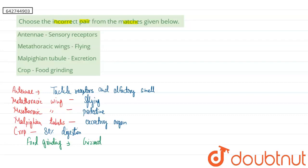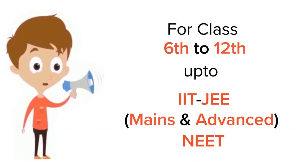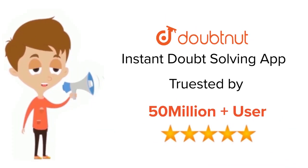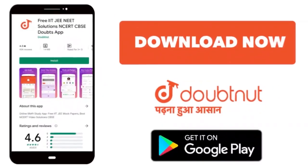So our correct answer will be fourth option, that is crop - food grinding. This is our incorrect pair. I hope this answered your question. Thank you. For class 6-12, IIT, and NEET level, trusted by more than five crore students, download doubtnet today.